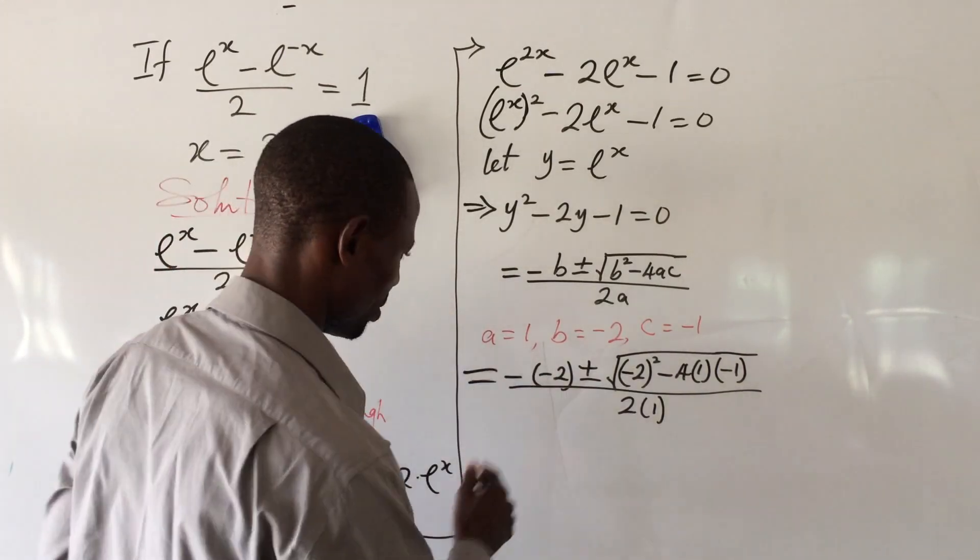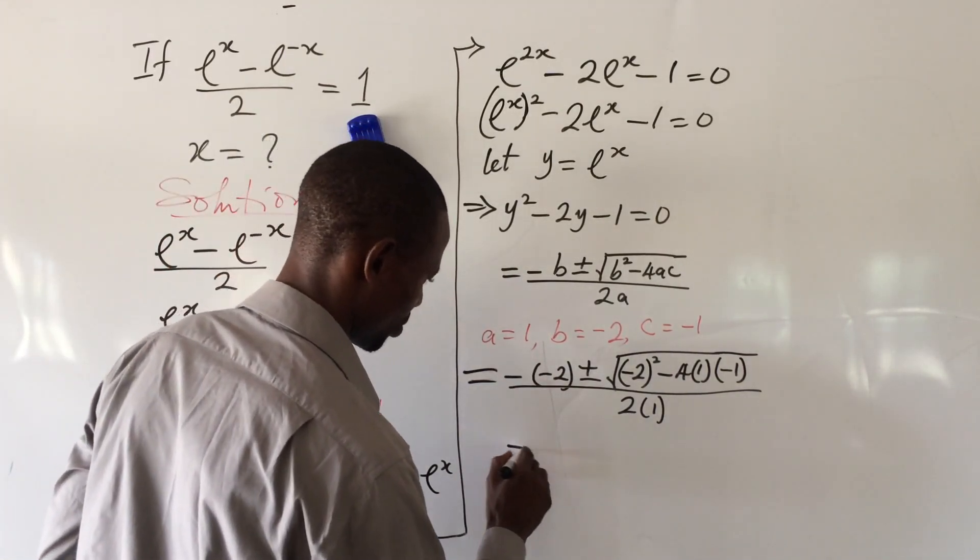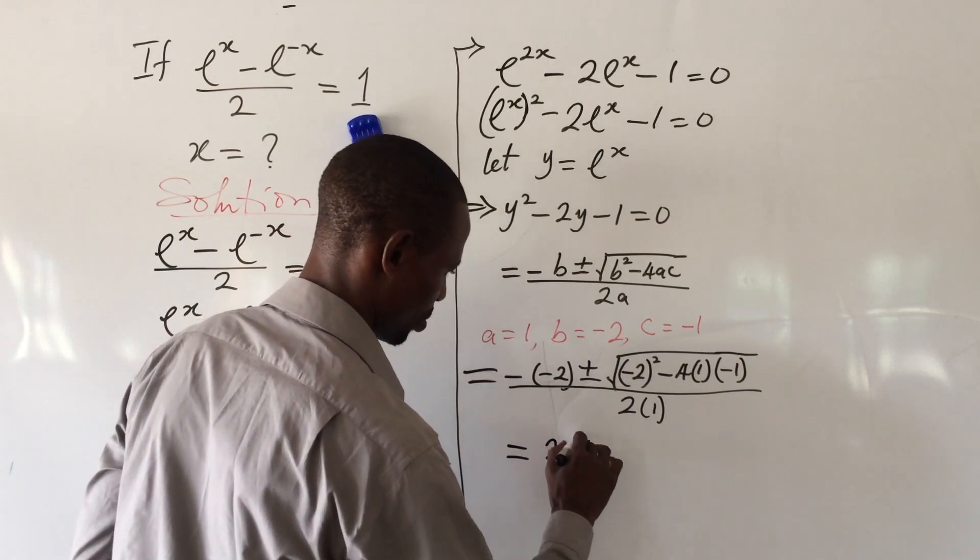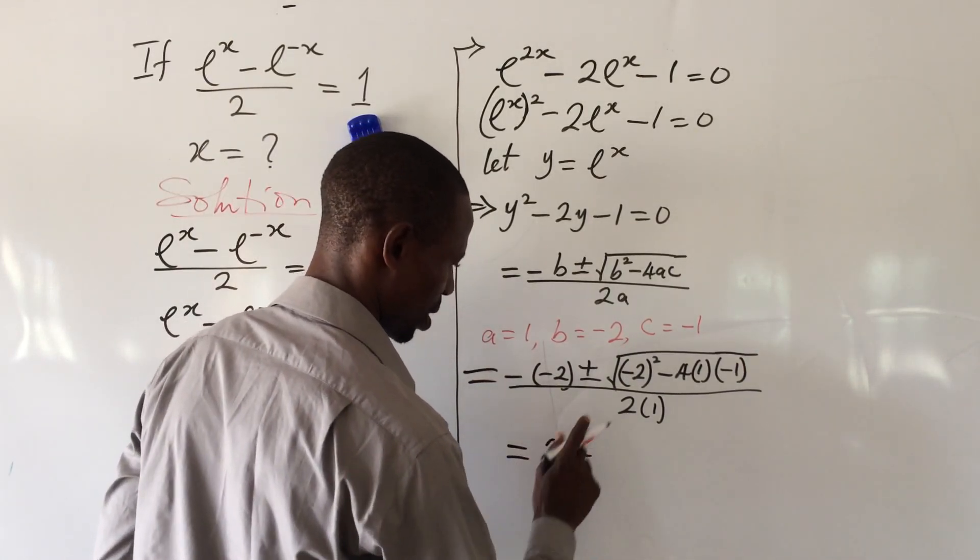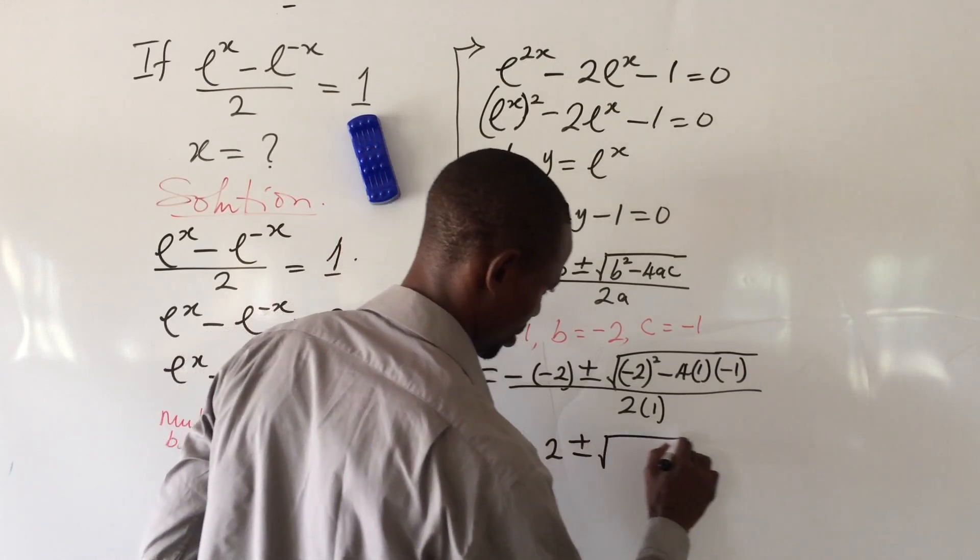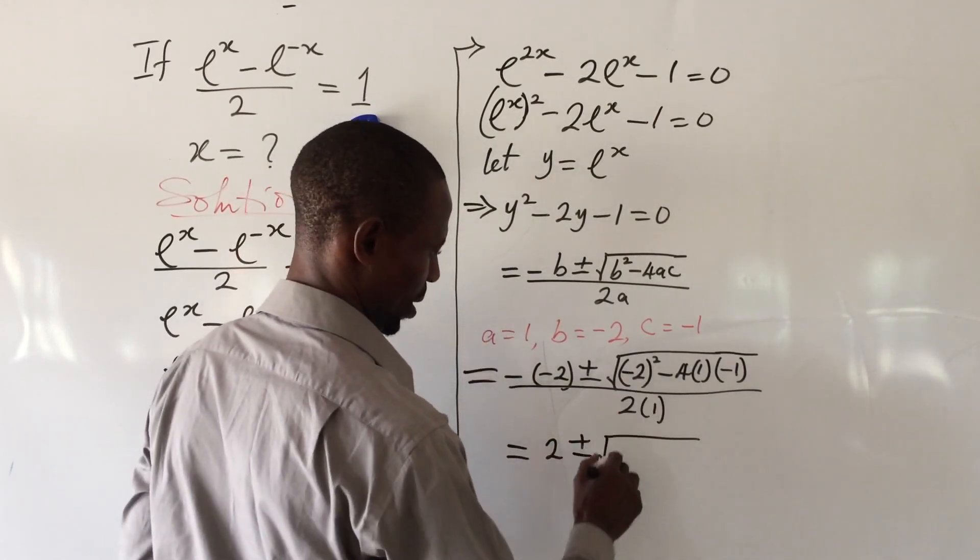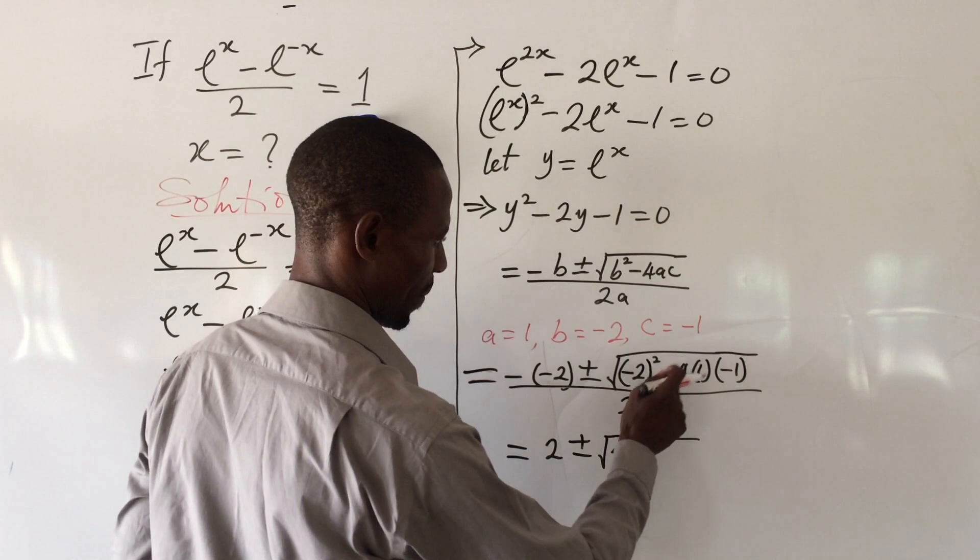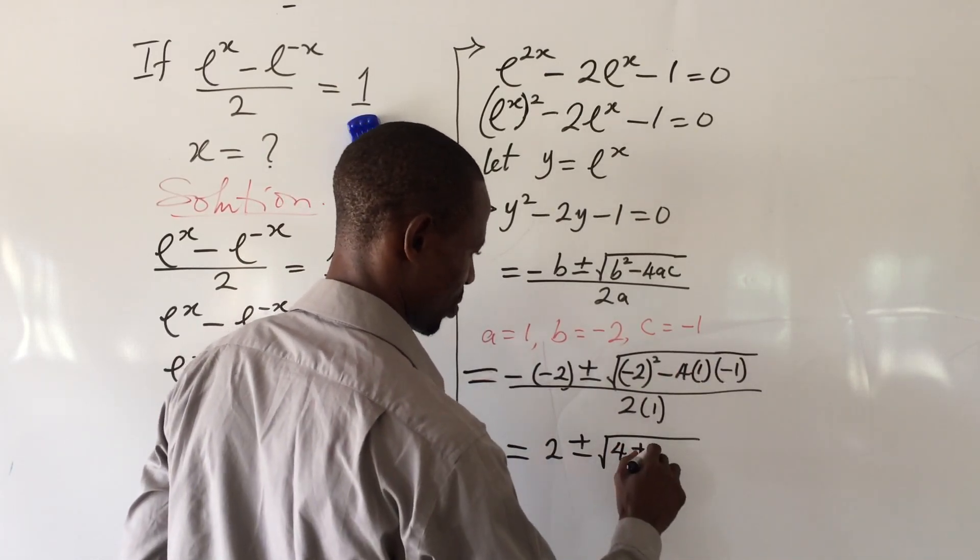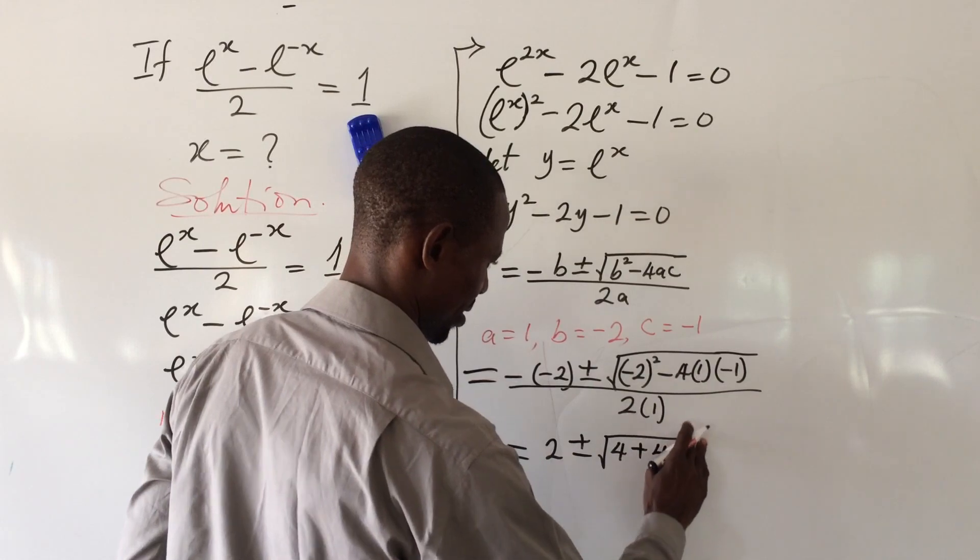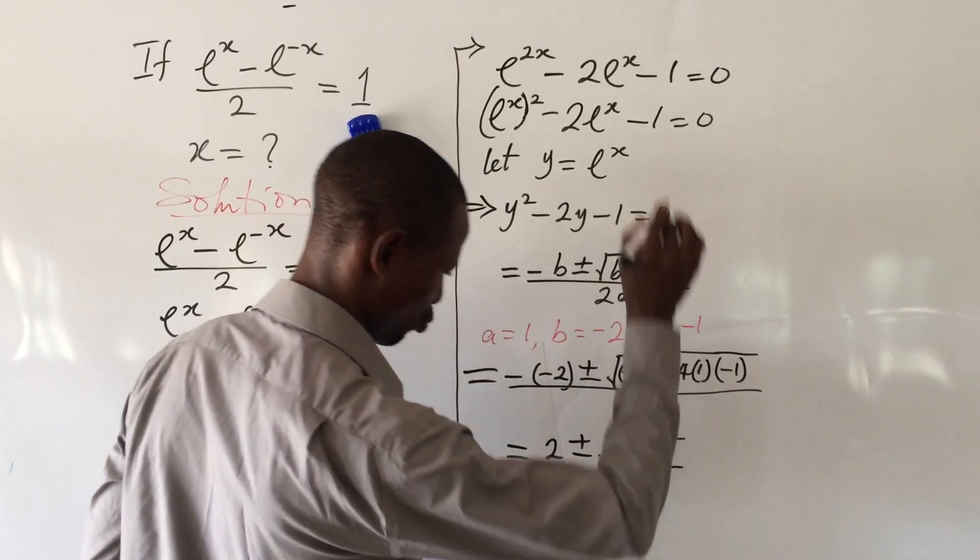Let's simplify this. Minus times minus gives us plus, so we're left with plus 2 plus minus the square root of 4. Minus times minus gives us plus, 4 times 1 times 1 gives us 4, all over 2.